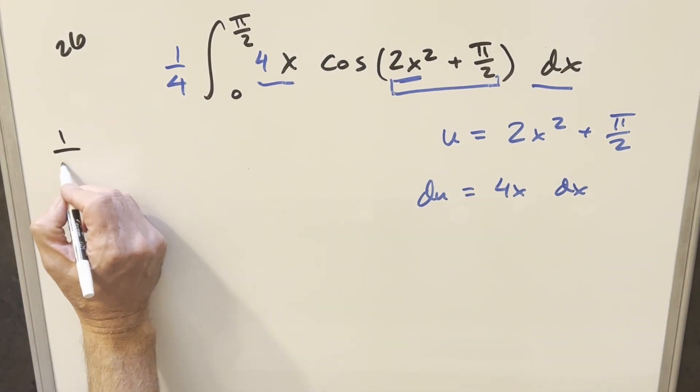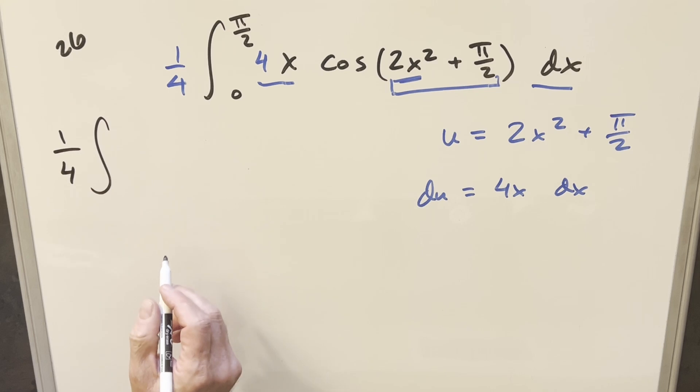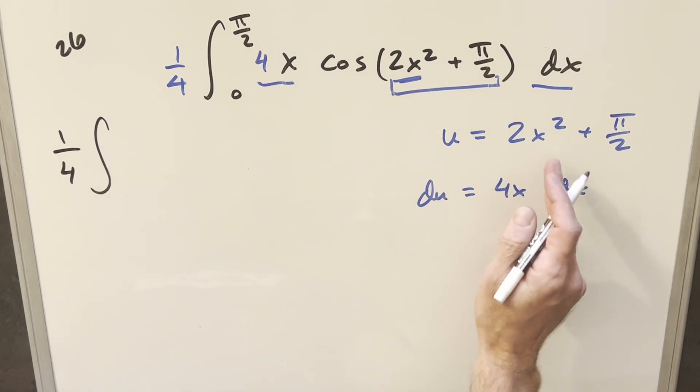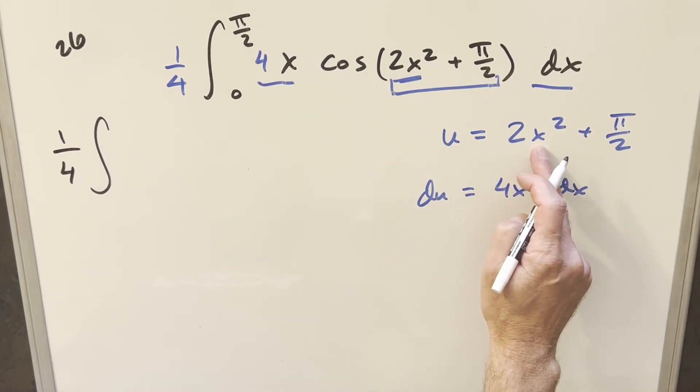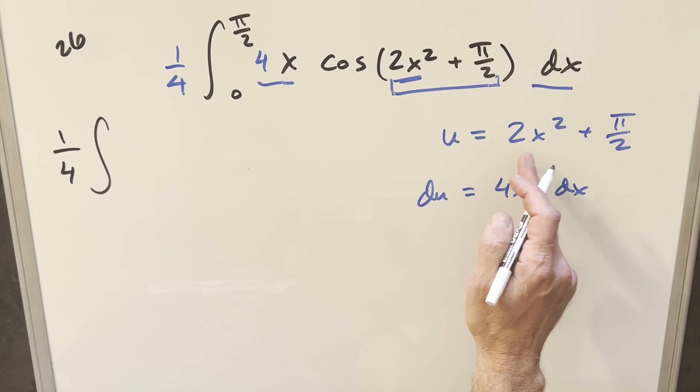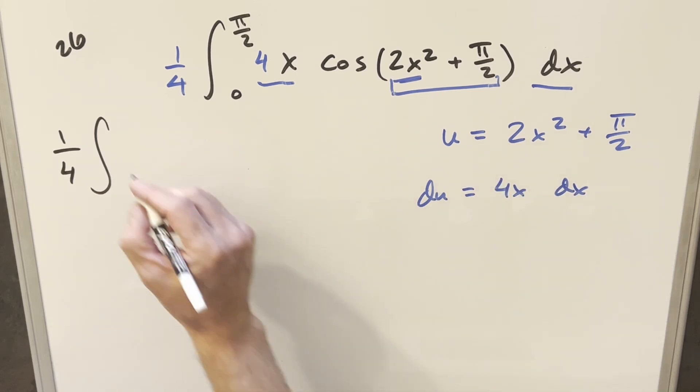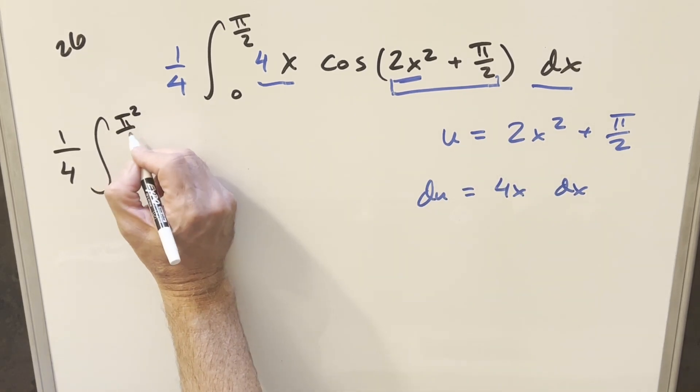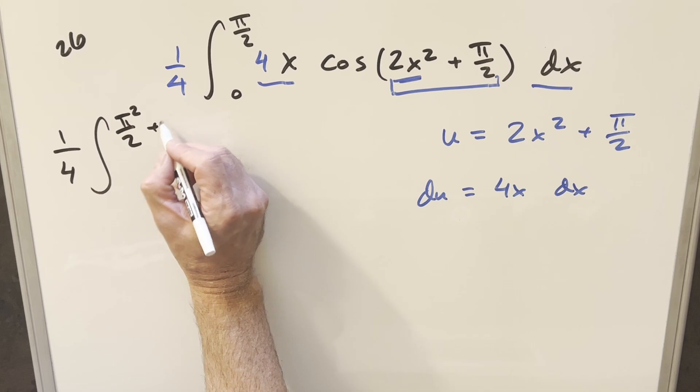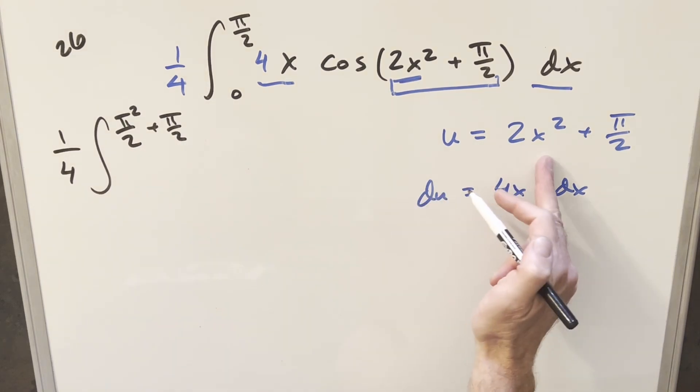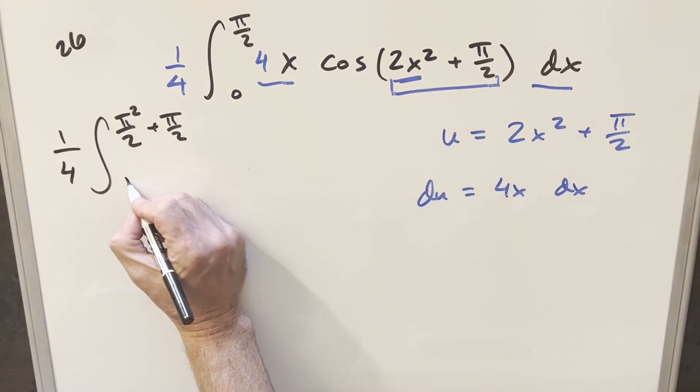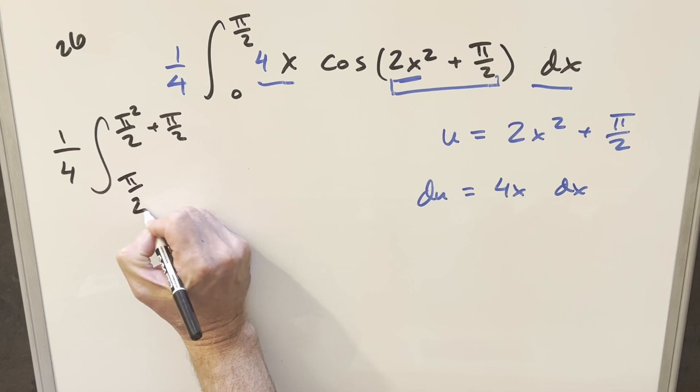So next, we'll go and substitute. I have this 1/4 in front. Taking pi over 2, and you plug it in there, pi over 2 squared is going to be pi squared over 4 times 2 is going to be pi squared over 2, and we still have this other pi over 2 in front here. Then you plug 0 in here. This 0 is at this, but we still have pi over 2 for the lower bound.